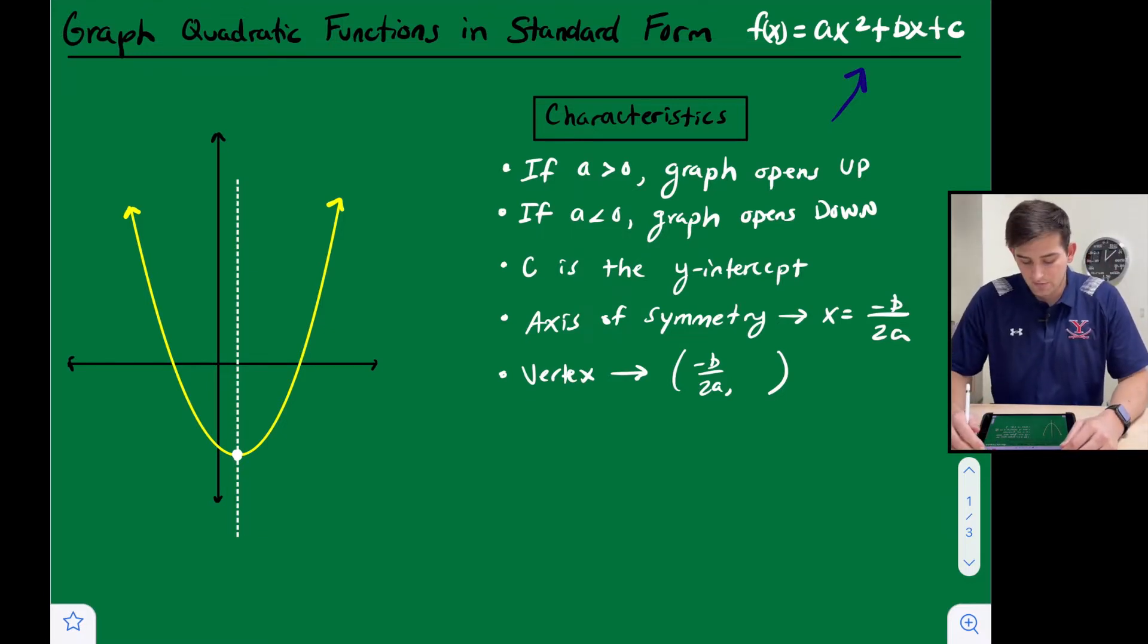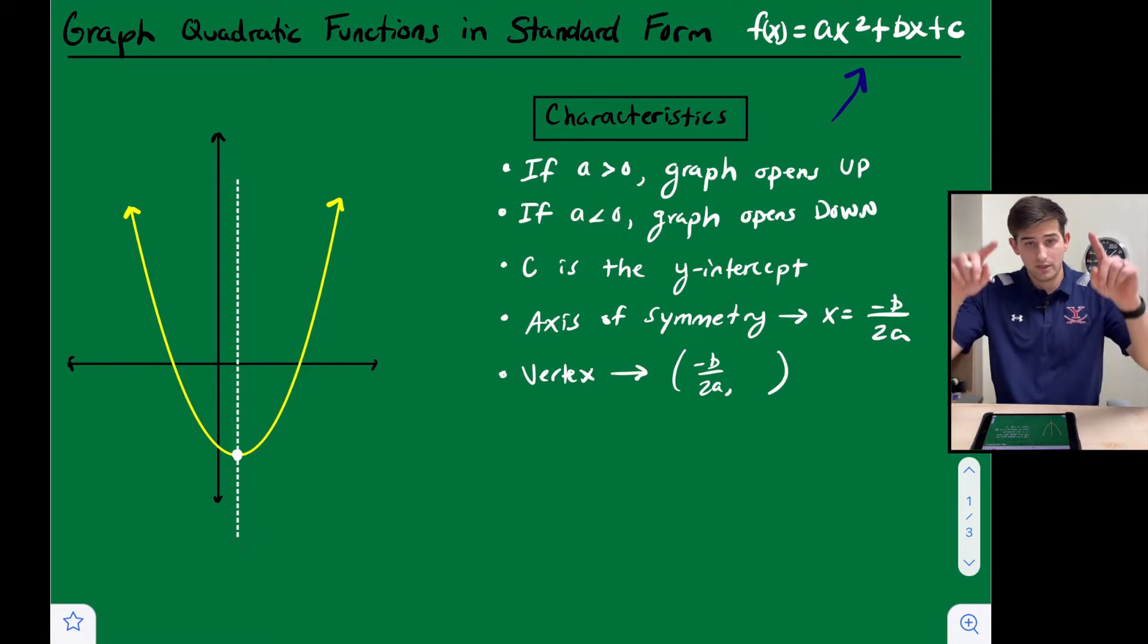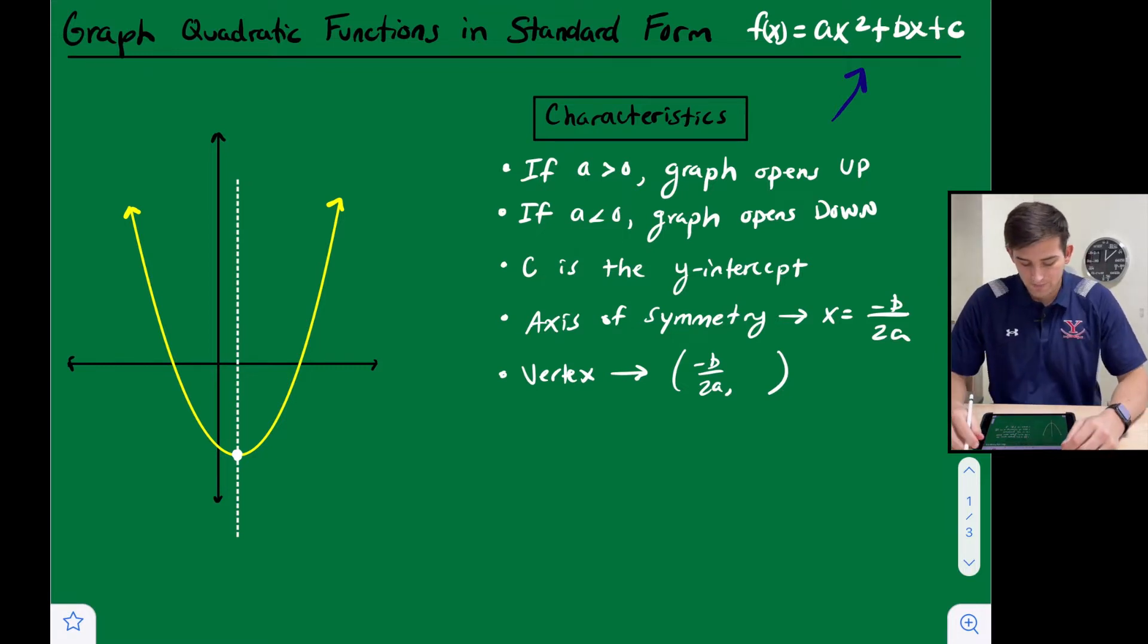So if a is a positive number, the parabola is going to open up, so our vertex will be at the bottom. And if a is a negative number, our parabola will open down, so our vertex will be at the top of the parabola. Another important aspect, c is the y-intercept.